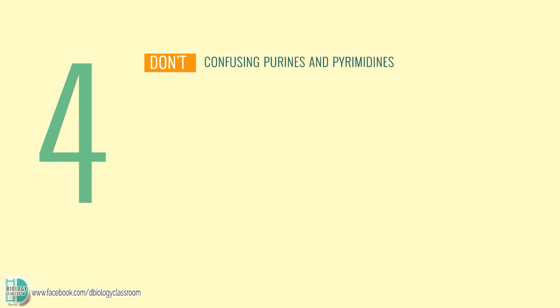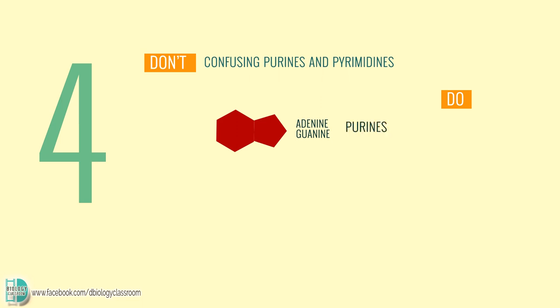Number 4: confusing purines and pyrimidines. The two carbon-nitrogen ring bases, adenine and guanine, are purines, while the one carbon-nitrogen ring bases, thymine, uracil and cytosine, are pyrimidines.